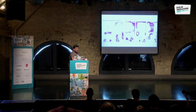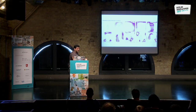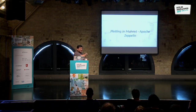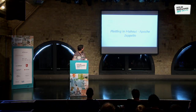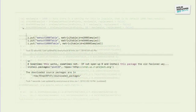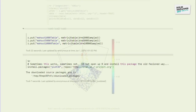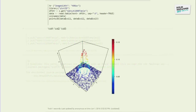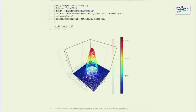Mahout now has complete integration with Apache Zeppelin for both Spark and Flink backends. All the Eigenfaces code we saw runs inside a Zeppelin notebook. You can also create different plots, visualize your results, and simulate data to see the visualizations — all from within Zeppelin.